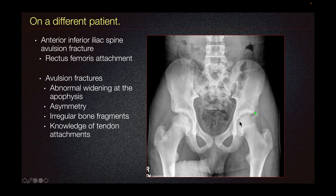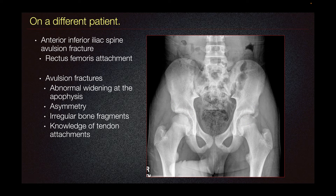Asymmetry to the contralateral side, as we can see on the right anterior inferior iliac spine, and any irregular bone fragments.